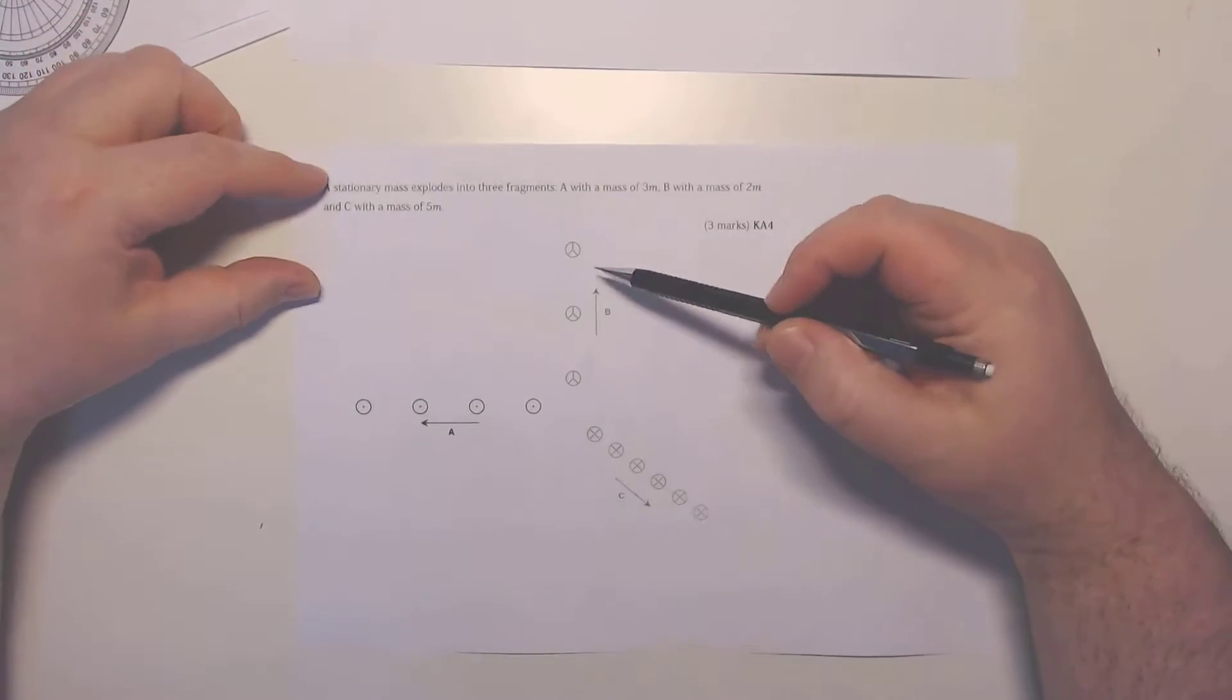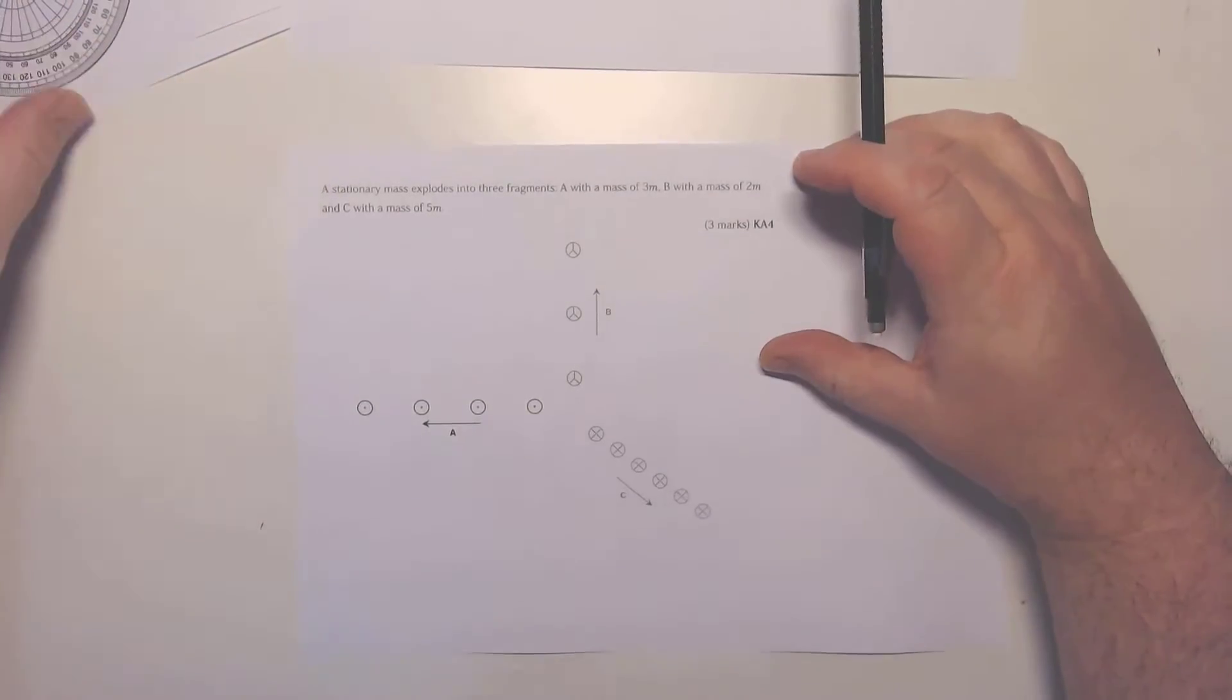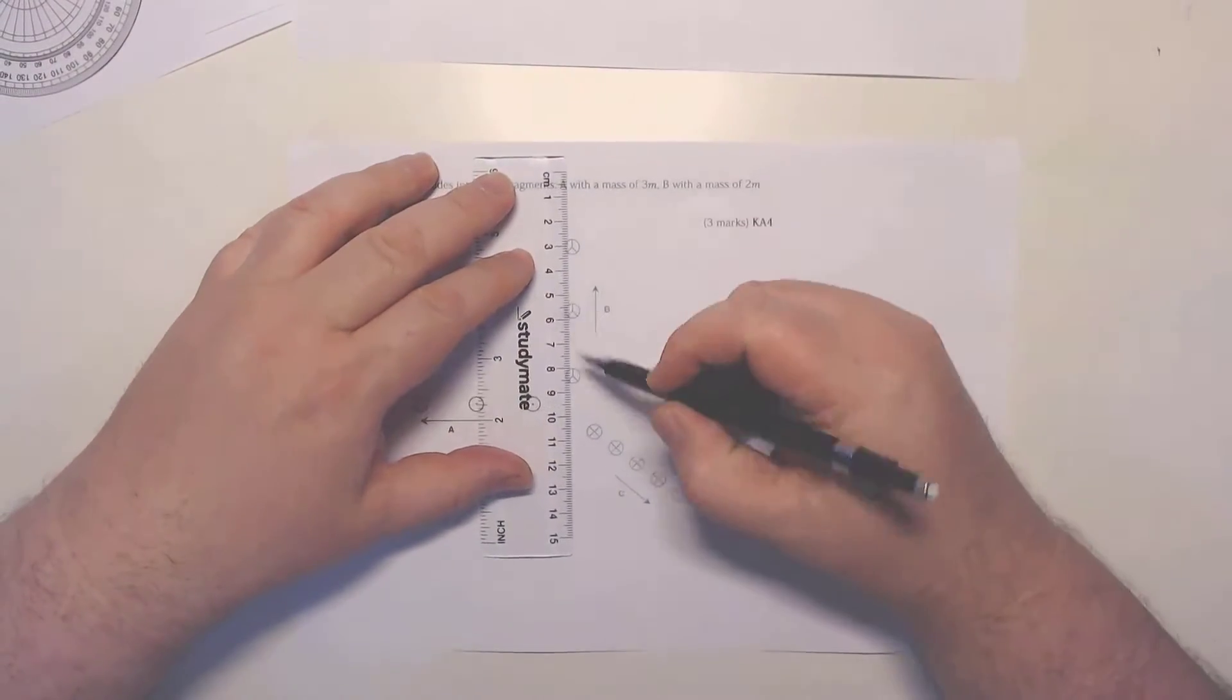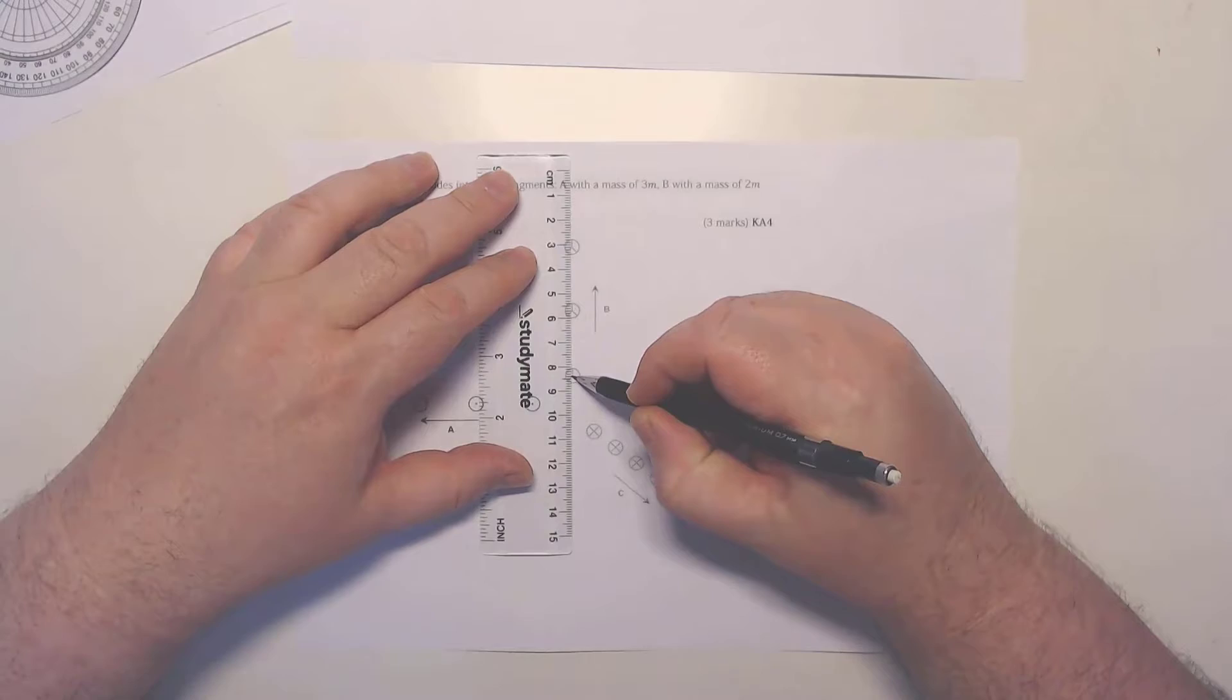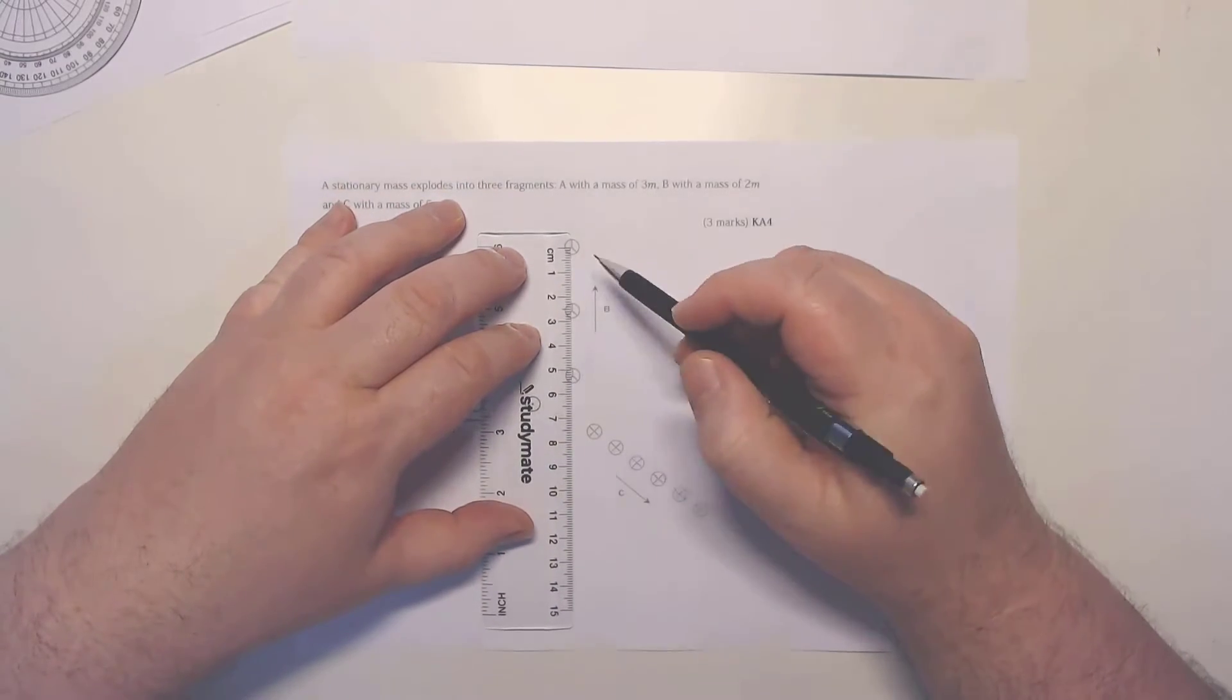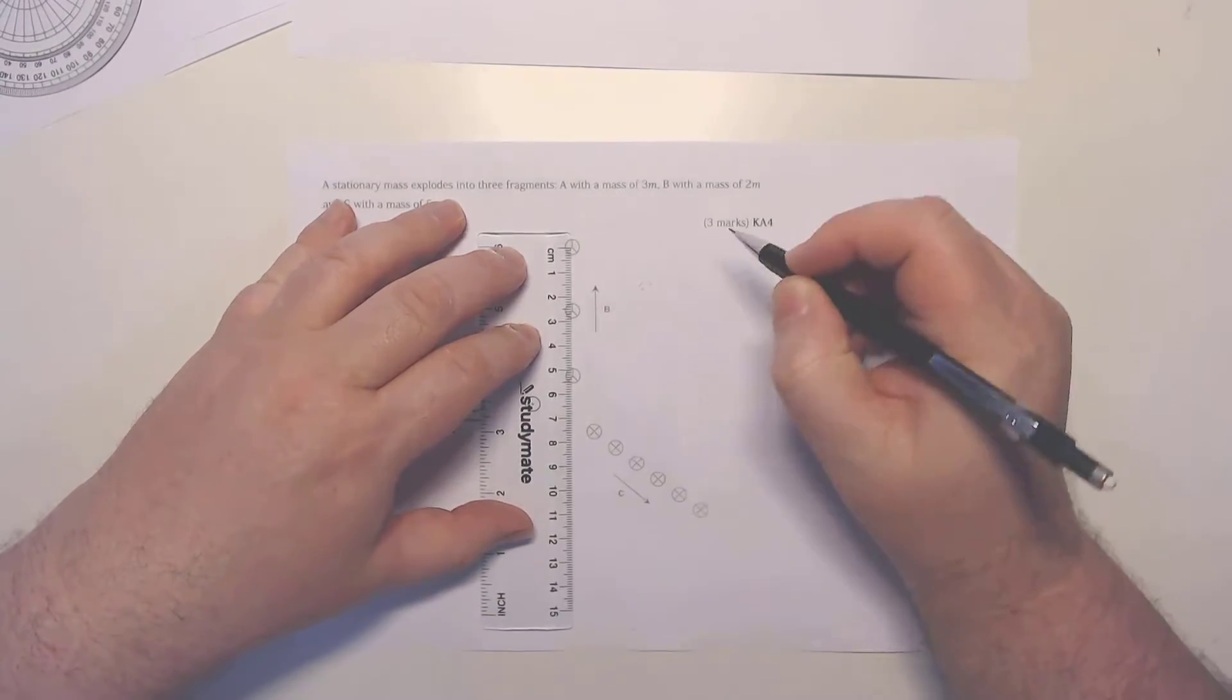Just getting my ruler here, I've got three points and I'm going to measure the distance between those three. This actually comes out to 53 millimeters.